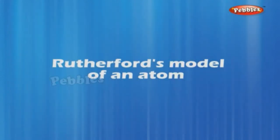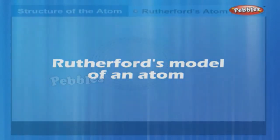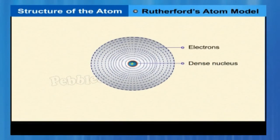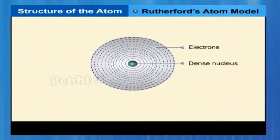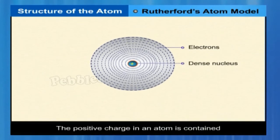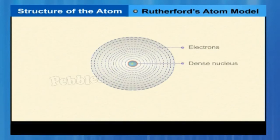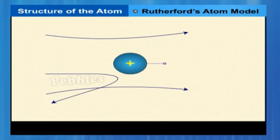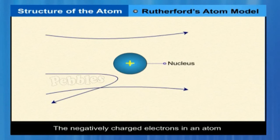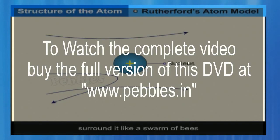Rutherford's Model of Atom. Rutherford proposed a new model of the atom. He suggested that the positive charge in an atom is contained in a small space called the nucleus. Most of the mass of the atom is also found only in the nucleus. The negatively charged electrons in an atom surround it like a swarm of bees. The Rutherford model of the atom is represented in the figure.